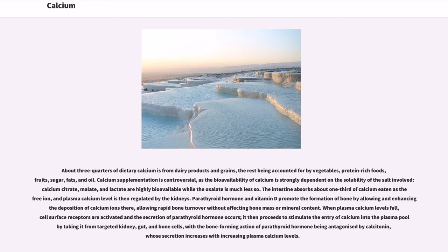About three quarters of dietary calcium is from dairy products and grains, the rest being accounted for by vegetables, protein-rich foods, fruits, sugar, fats, and oil. Calcium supplementation is controversial, as the bioavailability of calcium is strongly dependent on the solubility of the salt involved. Calcium citrate, malate, and lactate are highly bioavailable while the oxalate is much less so. The intestine absorbs about one-third of calcium eaten as the free ion, and plasma calcium level is then regulated by the kidneys.